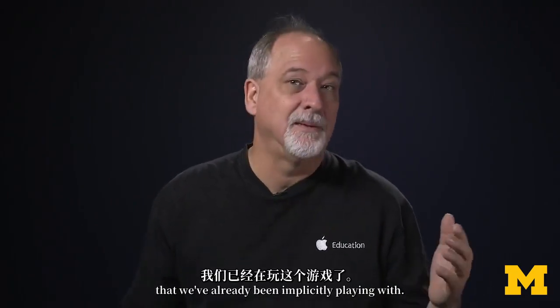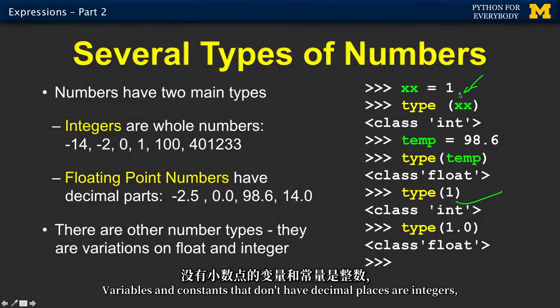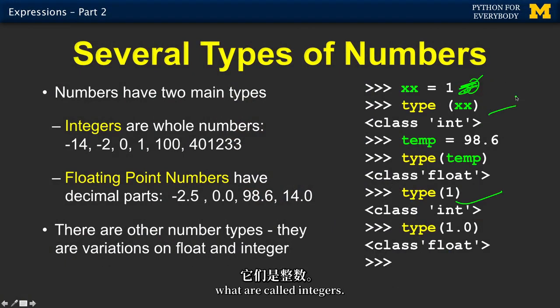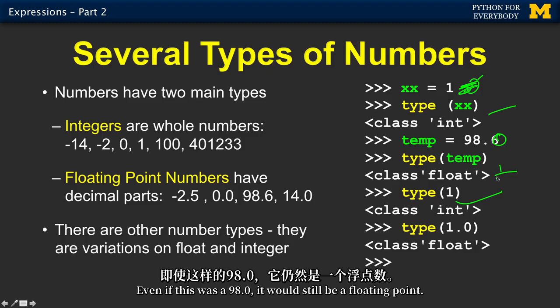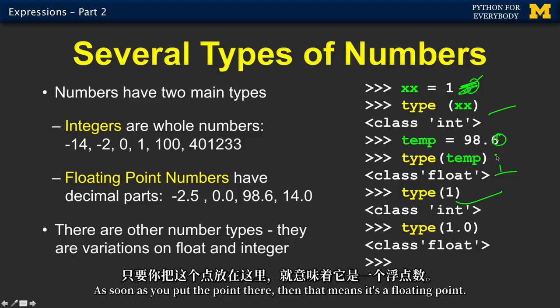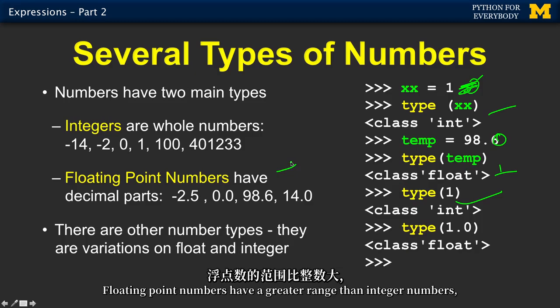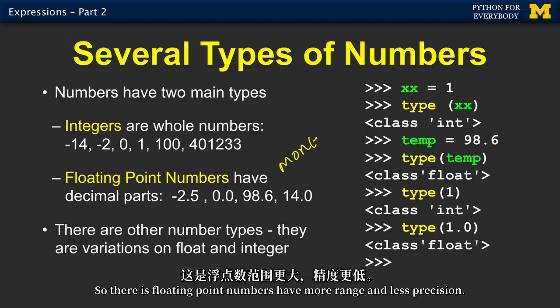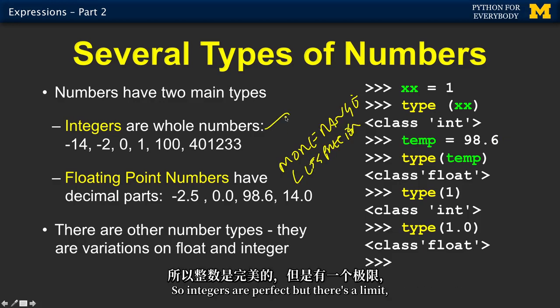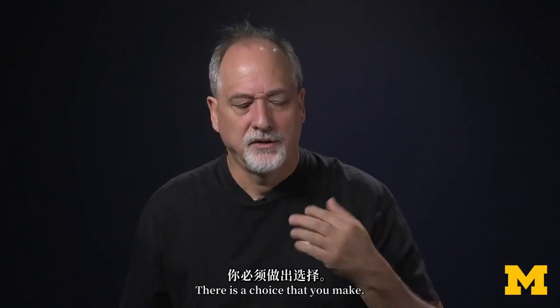And so there's several types of numbers that we've already sort of been implicitly playing with. Like I said, you can give a variable to type or you can give a constant to type. Variables and constants that don't have decimal places are integers, what are called integers. And variables that have decimal places are called floating points. Even if this was a 98.0, it would still be a floating point. As soon as you put the point there, then that means it's a floating point. They are represented internally differently. Floating point numbers have a greater range than integer numbers, but they are not always as precise as integer numbers. So there is floating point numbers have more range and less precision. So integers are perfect, but there's a limit like 4 billion or 4 trillion or something. There's a limit. Don't worry too much about that.